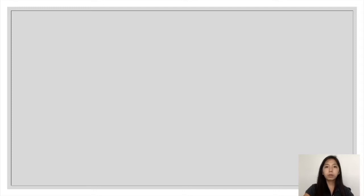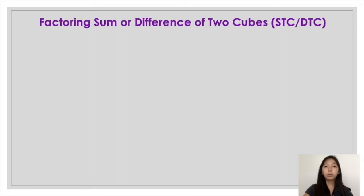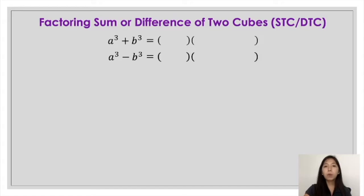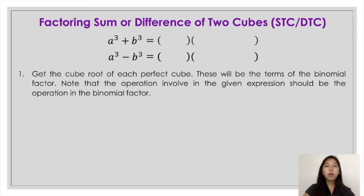Now that you know how to identify if a polynomial is a sum or difference of two cubes, you are now ready to factor this kind of polynomial. Given the general form of the sum of two cubes, a cube plus b cube, and the general form of the difference of two cubes, a cube minus b cube, the factors of these two would involve two quantities: one binomial and one trinomial. So how do we get the terms for the binomial and the trinomial factor?